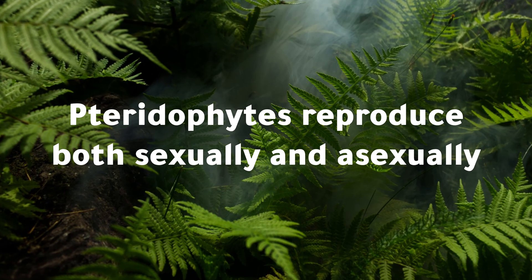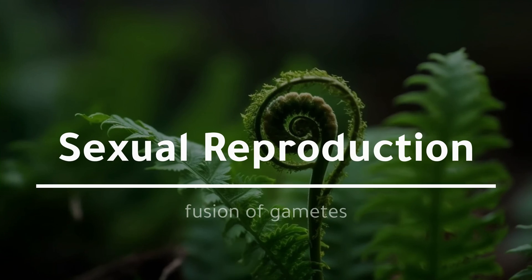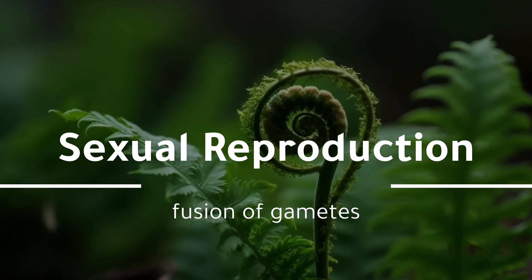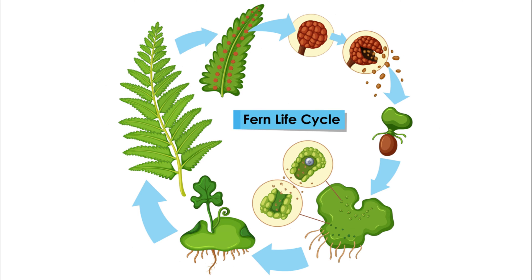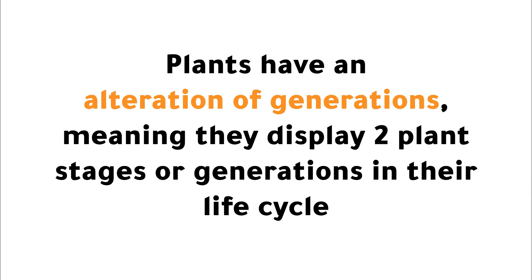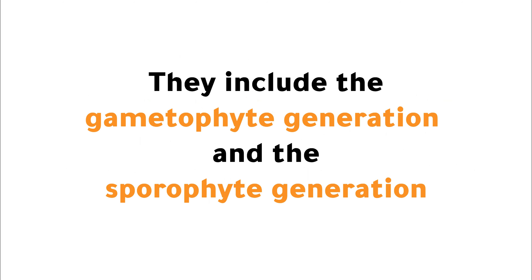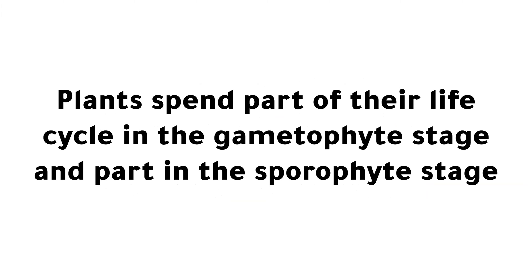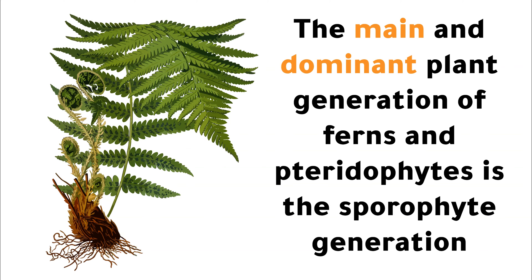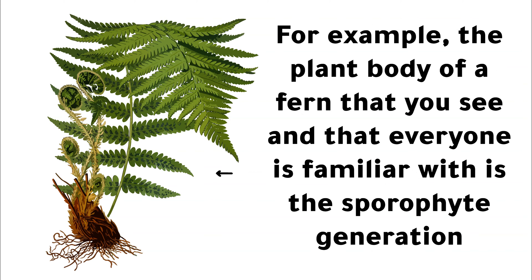Pteridophytes reproduce both sexually and asexually. Since ferns are the most recognizable species of pteridophytes, I will go over their life cycle. Plants have an alternation of generations, meaning they display two plant stages or generations in their life cycle. They include the gametophyte generation and the sporophyte generation. The main and dominant plant generation of ferns and pteridophytes is the sporophyte generation. For example, the plant body of a fern that you see and that everyone is familiar with is the sporophyte generation.